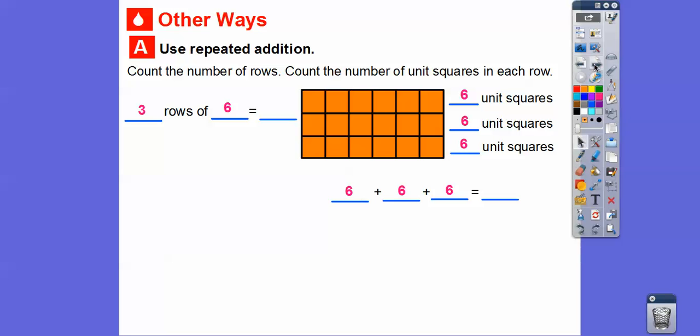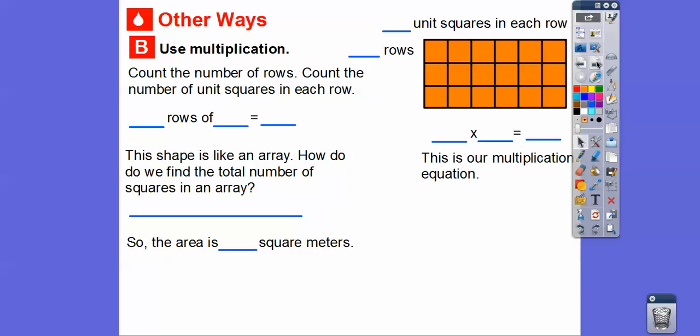So if we just add all those rows right there, so six plus six plus six—so six plus six is 12. Twelve plus six gives us 18. So the area is still 18 square meters.